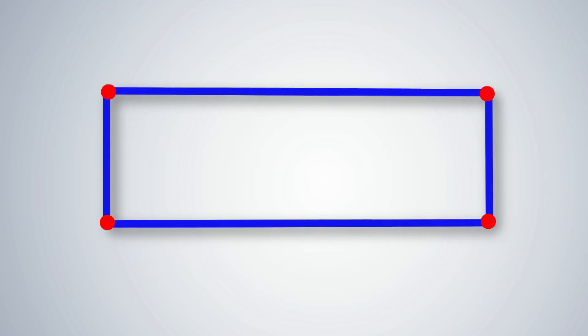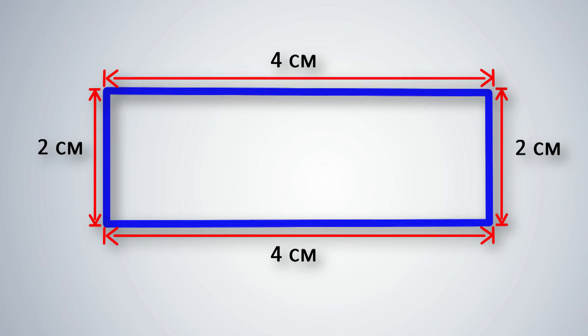Observe that a rectangle has 4 sides and 4 vertices. If one side of this rectangle measures 2 cm and the adjacent side measures 4 cm, the opposite sides will be of the same measure. Thus, opposite sides of a rectangle are equal.